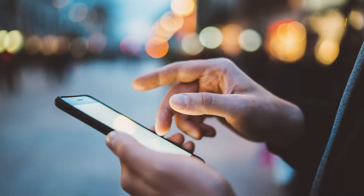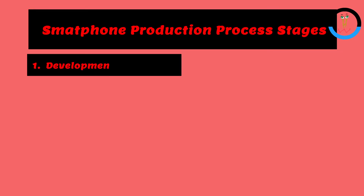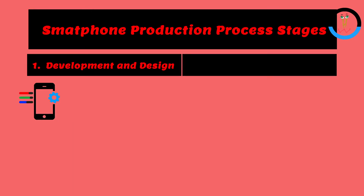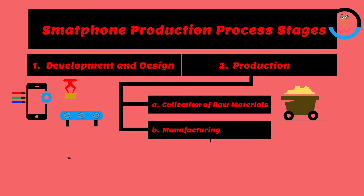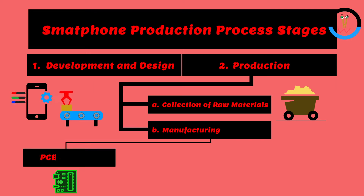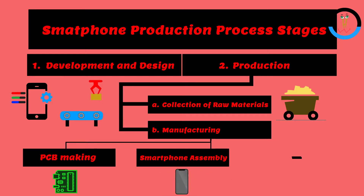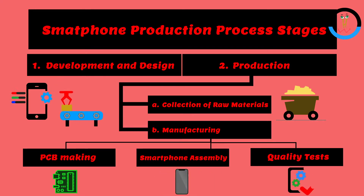Welcome again! The stages are: the first one is development and design. The second one is production. Production has two parts: collection of raw materials, and manufacturing. Manufacturing contains PCB (printed circuit board) making, smartphone assembly, and quality tests.